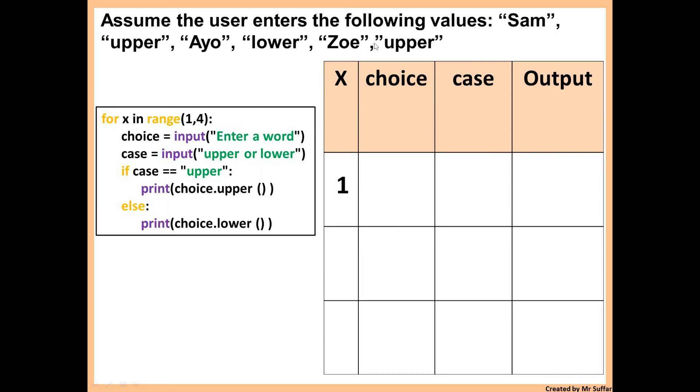Now whenever there is an input, we go back to the question, to the top of the question. It says the first input is Sam. So we need to put Sam for choice. Then the next input, so case equals input. So that's another input. So we go to the top of the question again: upper. Because that's the next part of the question. And then now we have choice is Sam and case is upper.